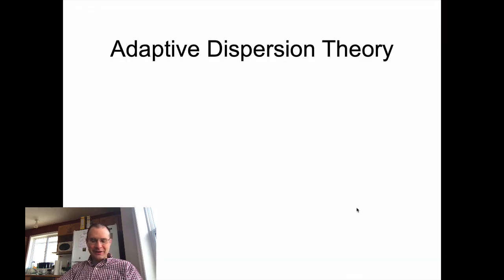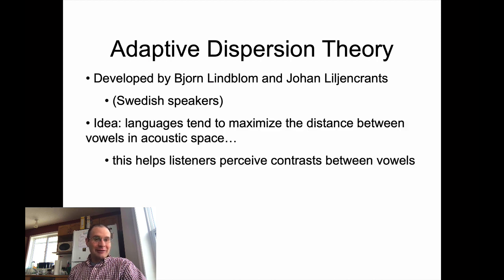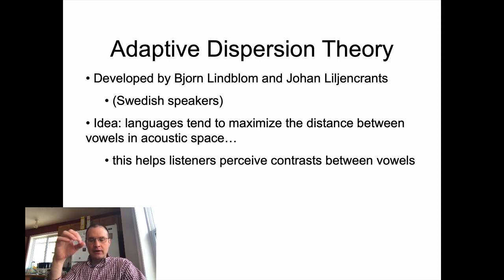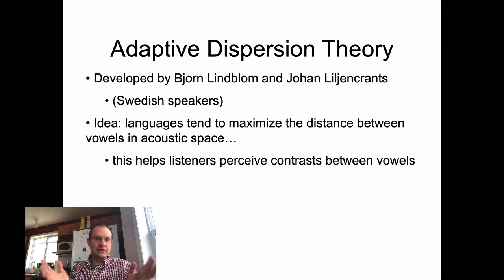So what's the answer to that question? The answer is what's called Adaptive Dispersion Theory. This is a theory developed by a couple of Swedish linguists named Björn Lindblom and Johan Liljencrantz back in the 70s. It may be coincidental that they're Swedish speakers, it may not. What this theory says is that languages tend to maximize the distance between vowels in acoustic space to help listeners perceive contrast between vowels. The answer to the question of why we don't get five vowels all clustered together in one part of the space is that it's harder to keep them distinct that way — it's harder for a listener to hear the difference between them.